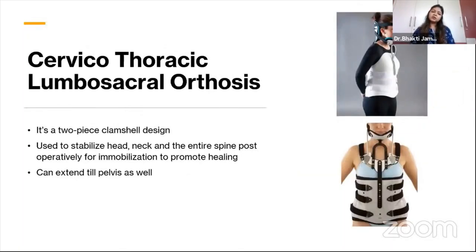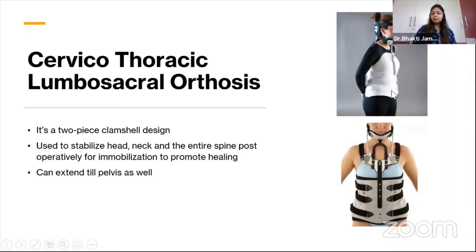Next is cervical thoracic lumbosacral orthosis, which comes in two parts: an upper part with chin and neck support, and a lower part providing entire spinal support extending to the pelvis. Both parts are attached by a clamshell, and the level of the spine covered depends on the requirement — either extending to the pelvis or just to the lumbosacral region. Again, it is used for immobilization post-operatively or for unstable fractures to promote healing.